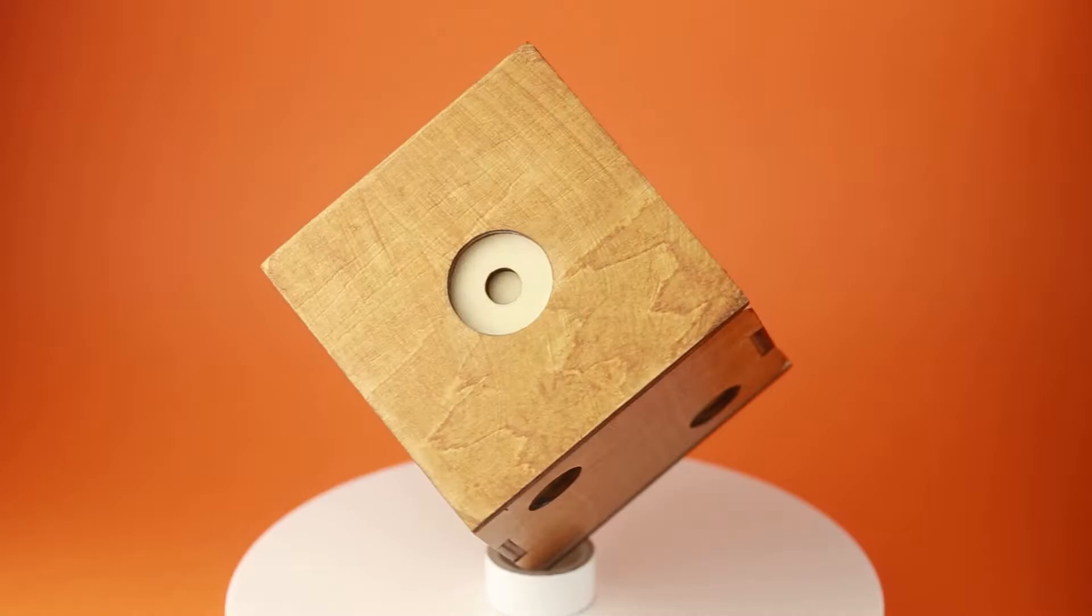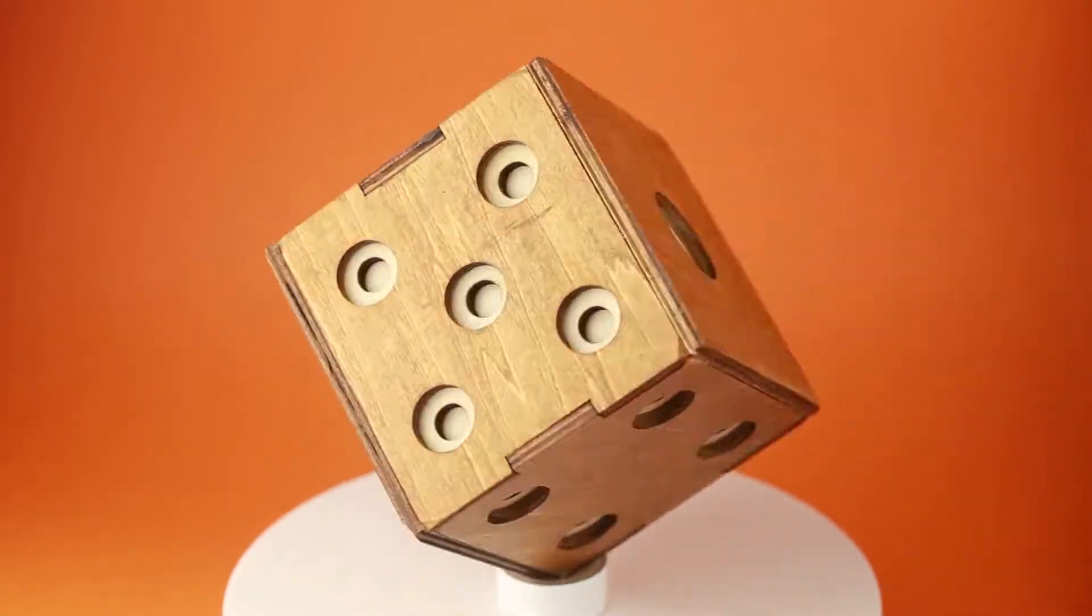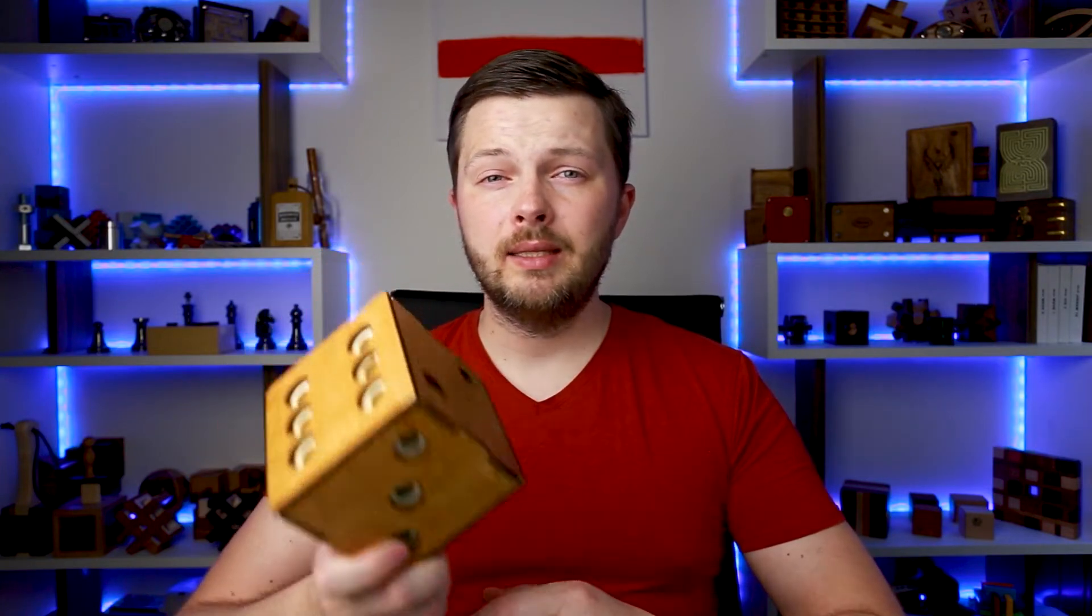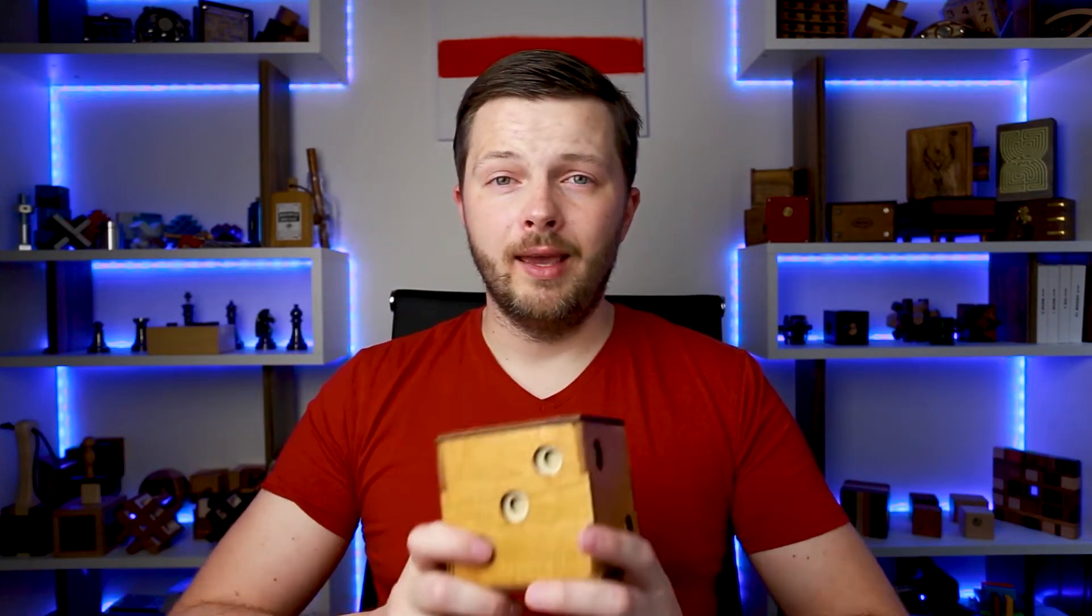Now back to today's puzzle. I'm going to solve Dice Secret Box. As you can see, this box looks like a huge dice. The object of this puzzle is to open the puzzle box. Difficulty level is nine out of ten and it requires 29 steps to open the box and 29 more steps to close it again.